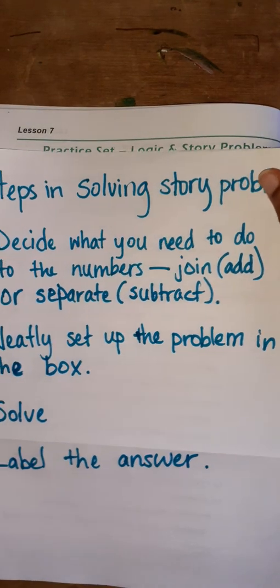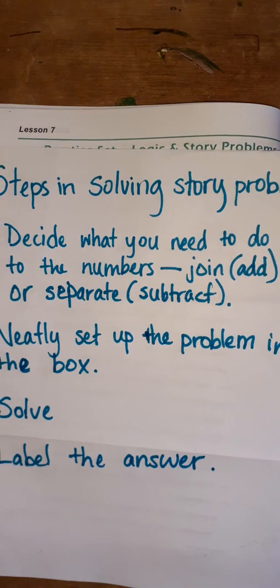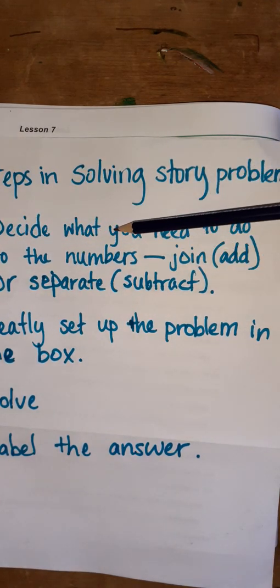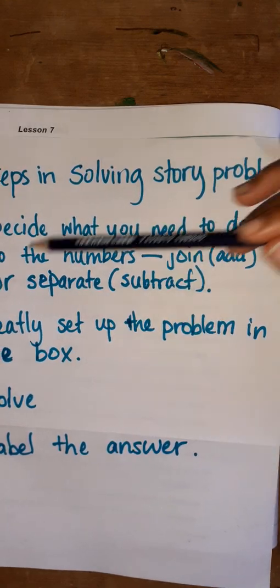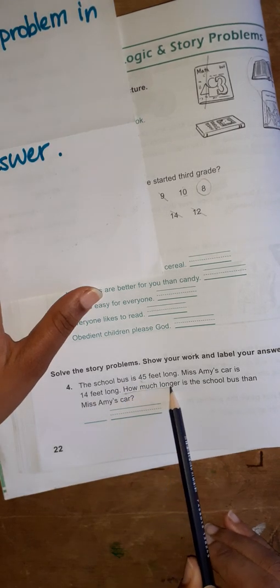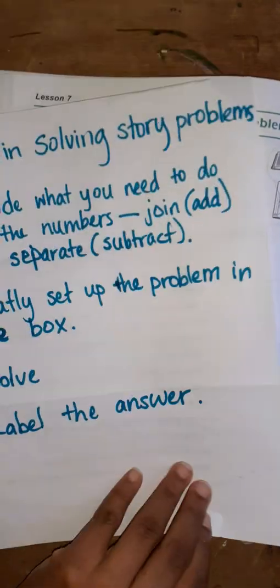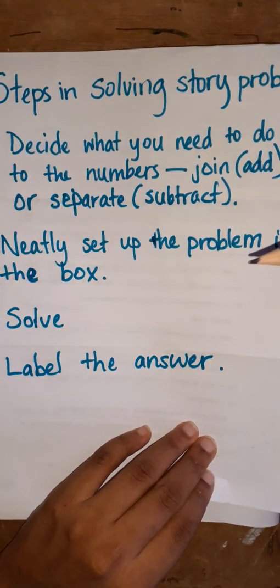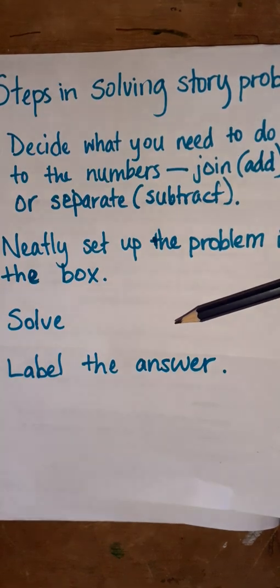Moving on to story problems. Before we begin, let's review the steps in solving story problems. Number one: decide what you need to do to the numbers. If you need to join, that means adding; or if you need to separate, that means subtract. Look at your numbers — the question will hint to you what you need to do. Then neatly set up the problem in the box, solve that problem, and label the answer.